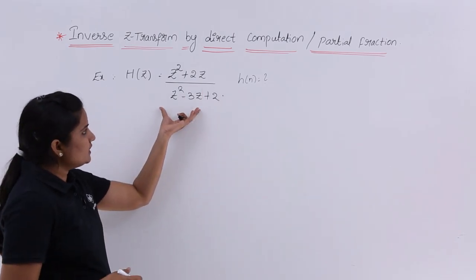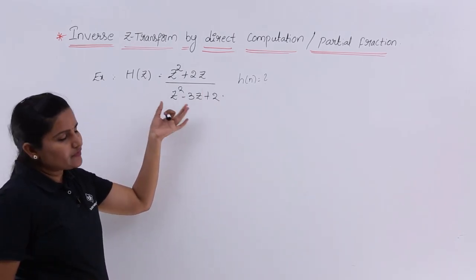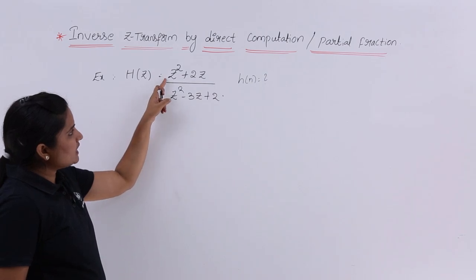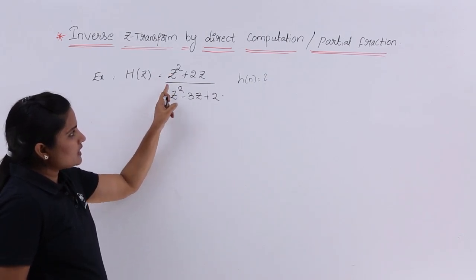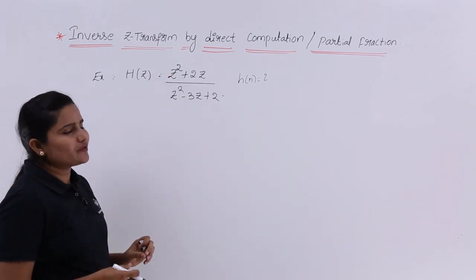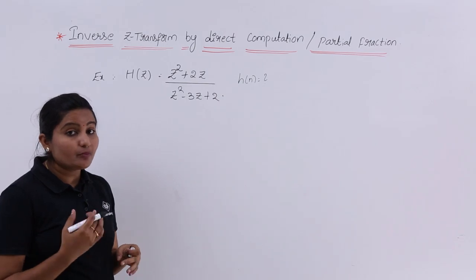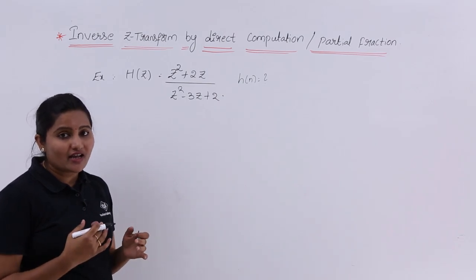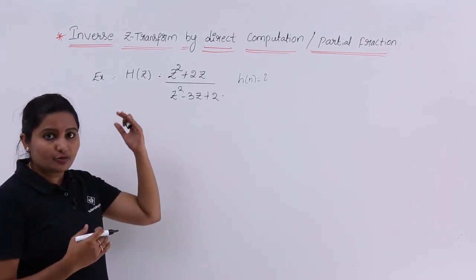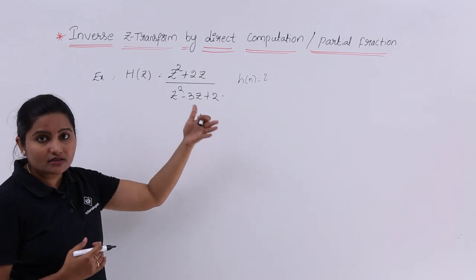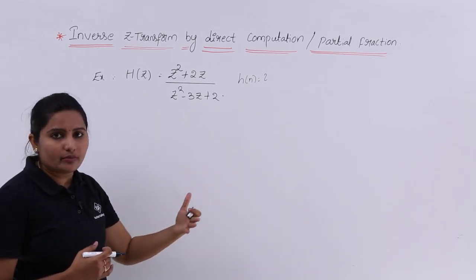Here, to apply the inverse Z-transform, if you see the polynomials are having equal powers. Generally we will go for this partial fraction method whenever the polynomials are having equal degree, or the numerator has a greater polynomial degree.